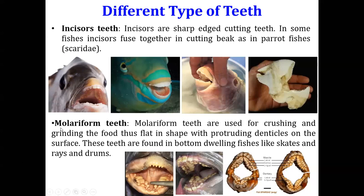The fourth type is molariform teeth. They are used for crushing and grinding food, which is why they are flat in shape. You can see the molars on the upper and lower jaw, and the incisors in the front. This kind of teeth are found in skates, rays, drums, and many other fishes.